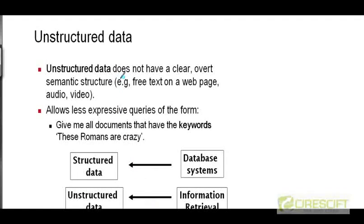Unstructured data, on the other hand, does not have a clear overt semantic structure. The best example of that is free text on a web page. Audio and video content is also unstructured. If you are a blogger and you write blog posts, that kind of data is also unstructured. Think of free text as the canonical example of unstructured data. When your data is not organized into a relational database and does not have an explicit structure, you don't really know what the data actually means. As a human being you can read free text and understand it, but it's very hard for a computer. So when your data is unstructured, your queries need to be extremely simple for us to be able to build a system to answer them.